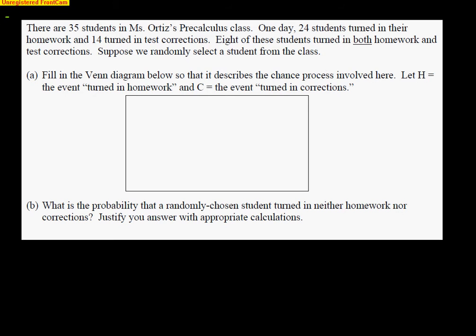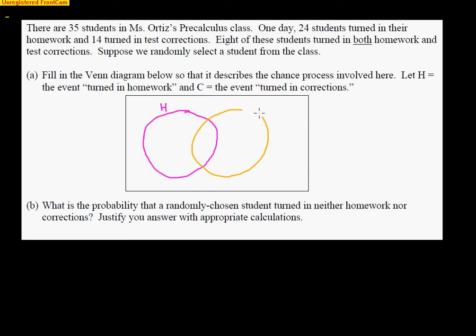Let's take a look at another example. There are 35 students in Mrs. Ortiz's pre-calculus class. One day, 24 students turn in their homework and 14 turn in their test corrections. Eight of those students turn in both homework and test corrections. Suppose we randomly select a student. First, we want to make a Venn diagram — H is homework, C is test corrections. I know they overlap because some kids turned in both, so these are not mutually exclusive.